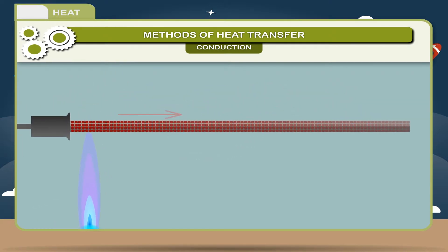In this flow, the molecules of the object do not move. Thus, heat is transferred through an object without the movement of the molecules. This process of heat transfer without the actual movement of molecules is called conduction.